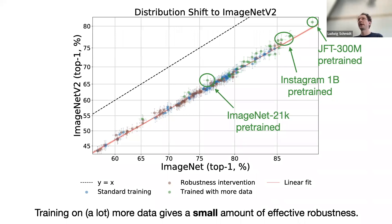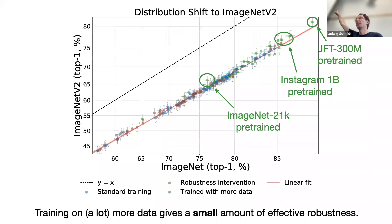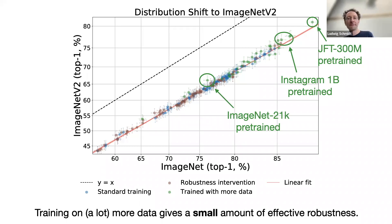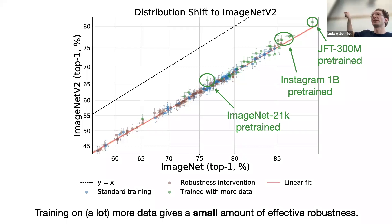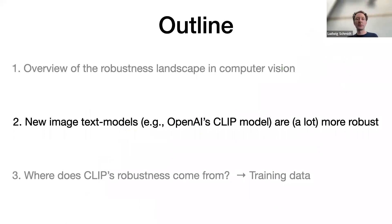Focusing back on the effect of data: using 1000 times more data — the Instagram model has a billion training points versus ImageNet's one million — only gives about 4–5 percentage point improvement. If you extrapolate, you would need 10^10 times more data to close the gap entirely. But the catch is that at the time, we didn't understand how fine-tuning to ImageNet reduces robustness. This only became clear after the CLIP model came out — so let's talk about CLIP.